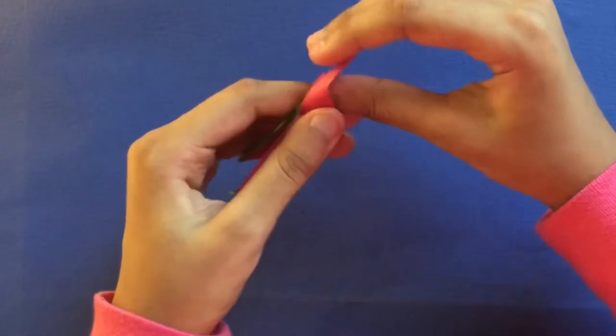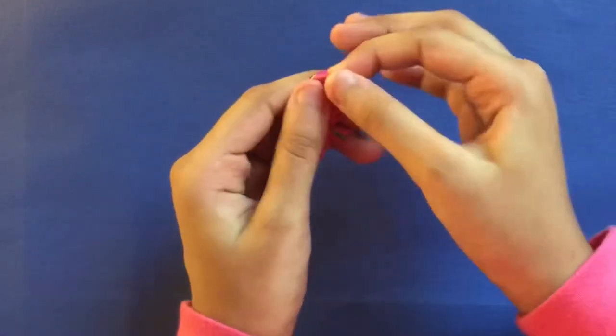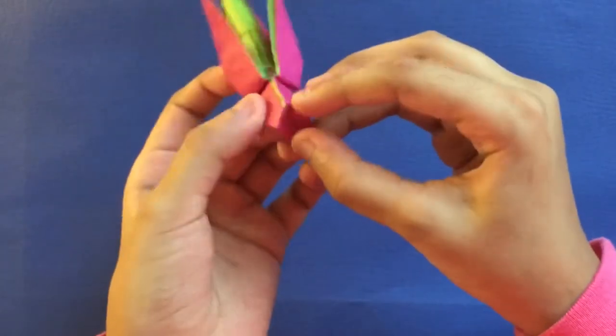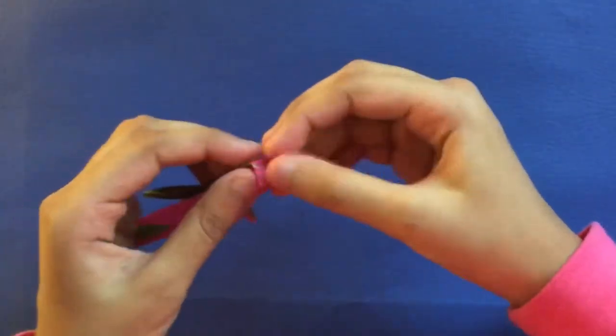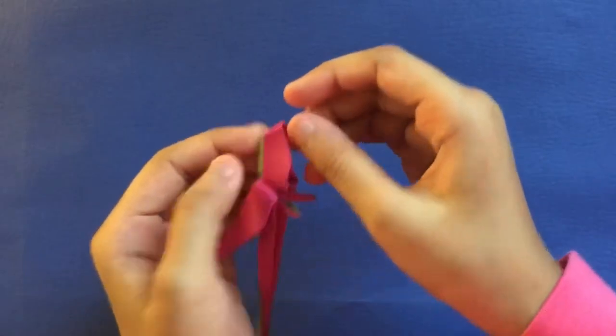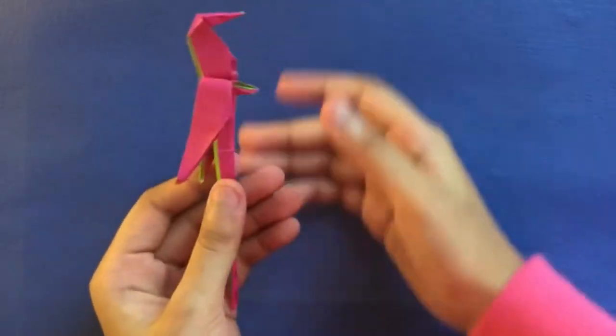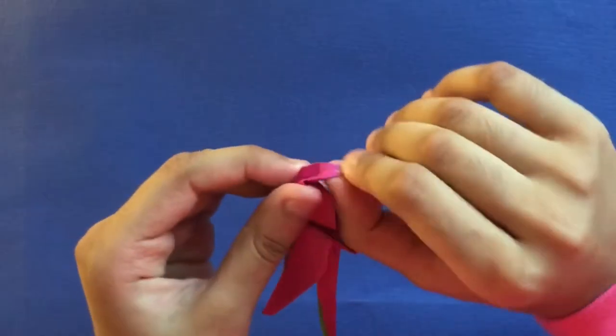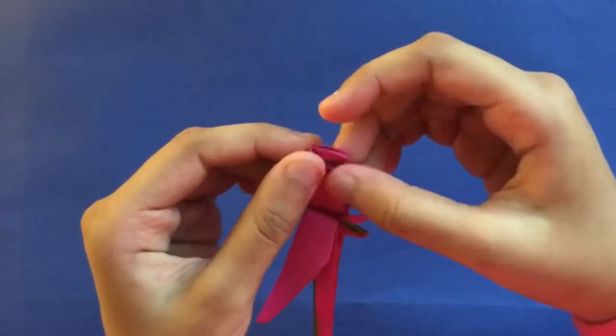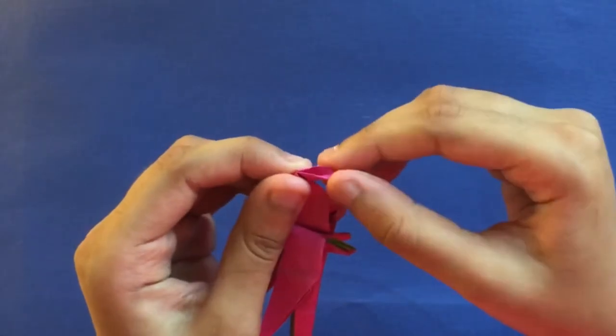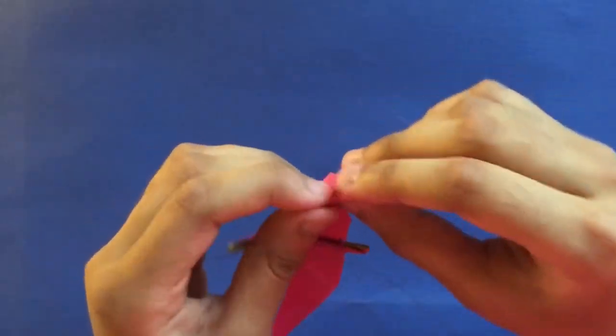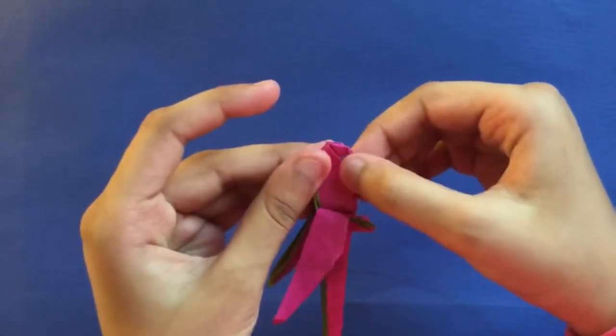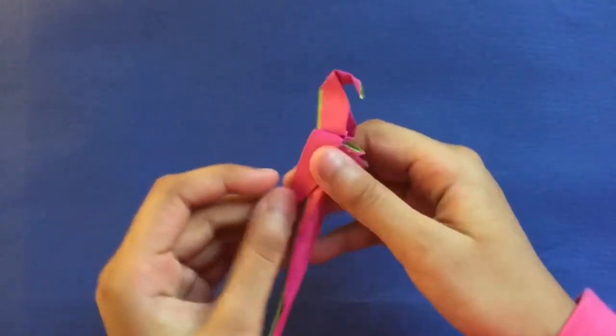Now we're going to make the reverse fold. Do it as big as you want. If you want a baby parrot, then make a big head. But if you want an adult, I'd say go like that. And if you want, you can make another fold. Let's make it a little bit bigger. Like that. Ain't that cool?